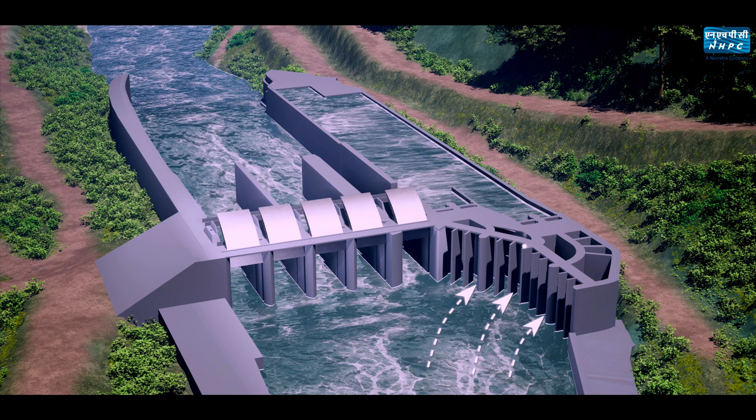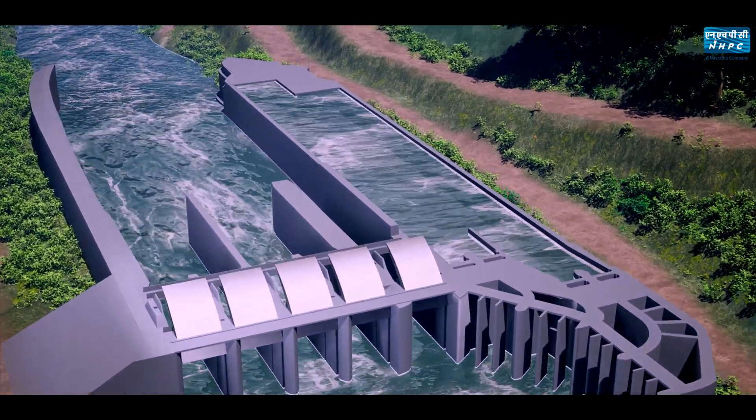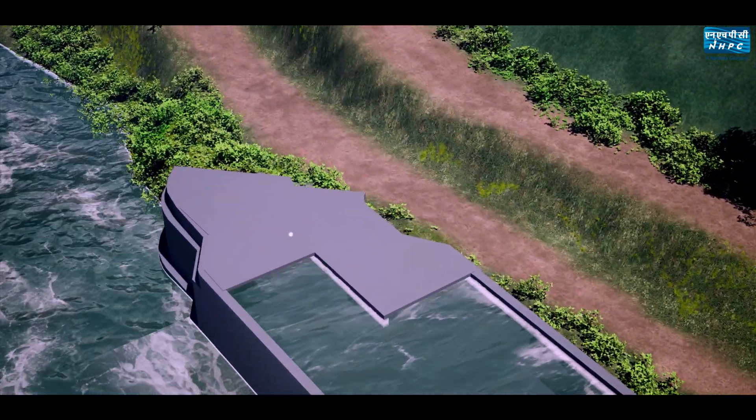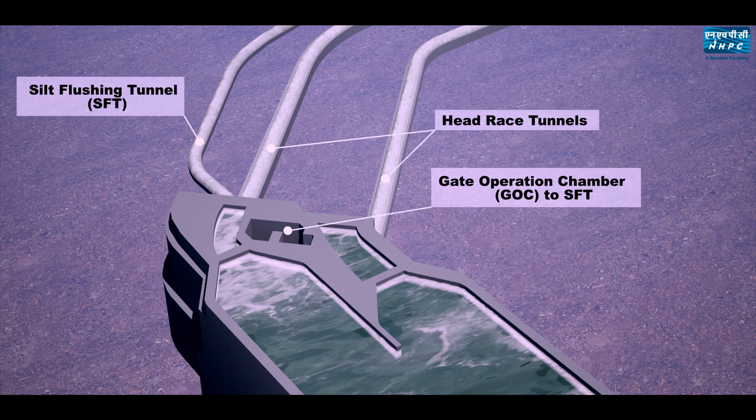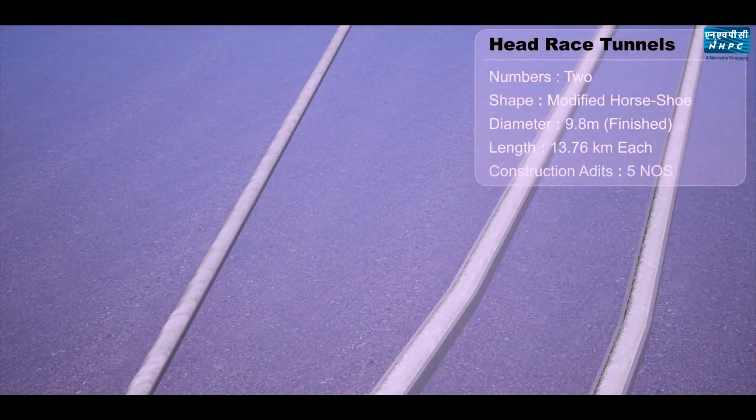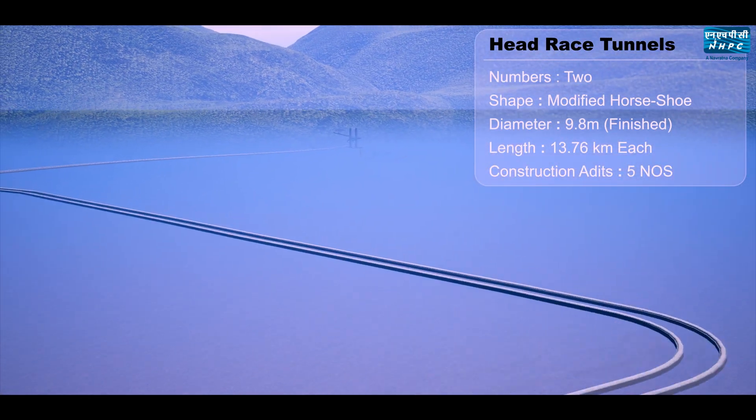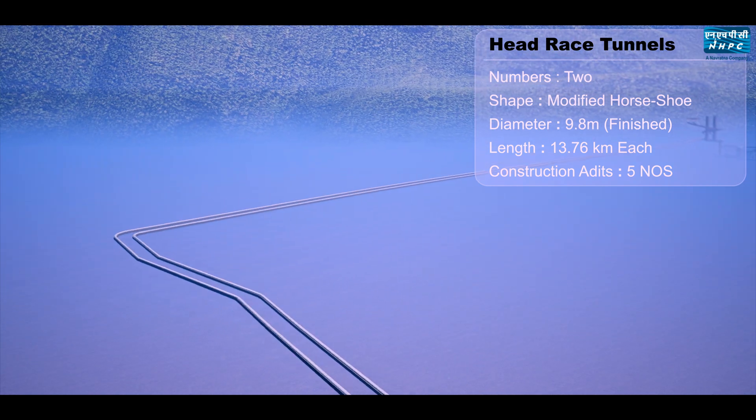Water shall enter the head regulator structure which will lead the water to the two desilting basins to remove the silt from water. There are two intake structures in the downstream of desilting basin to divert the water into head race tunnels. Each head race tunnel is 13.76 kilometers long, modified horseshoe shape.